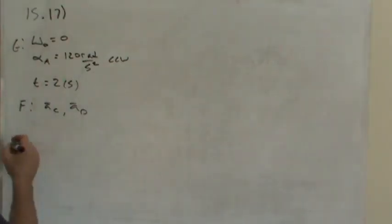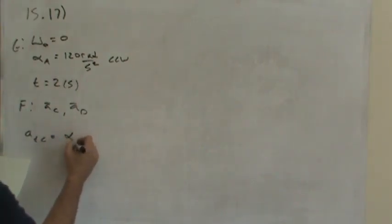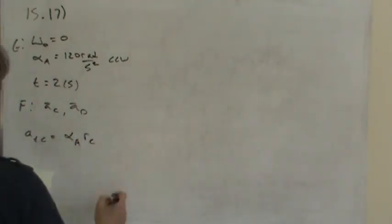Now if you think about it, the tangential acceleration at C would be the angular acceleration of A multiplied by the radius of C. And I'm using the angular acceleration of A because that's what's given. But the angular acceleration of A and of C would be the same because the two wheels have the same radius. They're both two and a quarter inches in radius. And so the tangential acceleration of point C is pretty easy to come up with.